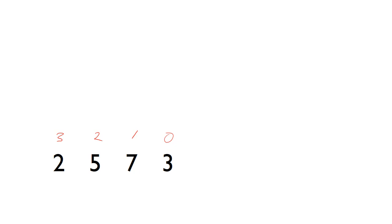Take the number 2573 for example — just by looking at it, we know it is 2573. Starting from the right-hand side, that's the least significant digit, so we call that digit zero, digit one, digit two, digit three. Each column is worth a particular power of 10 depending on the digit number: 10 to the power of zero is one, 10 to the power of one is ten, 10 squared is a hundred, and 10 cubed is a thousand — that gives you the weight of that column.